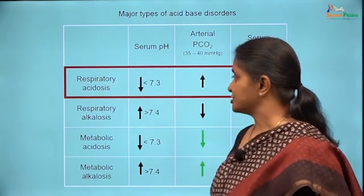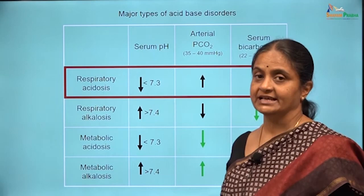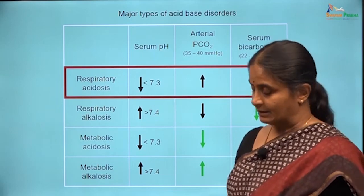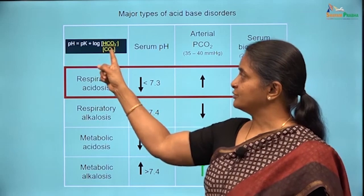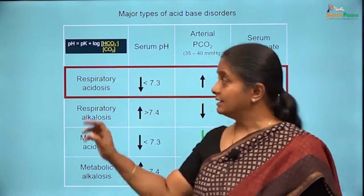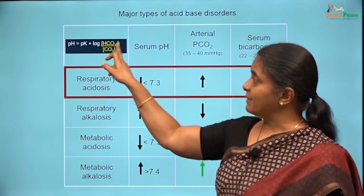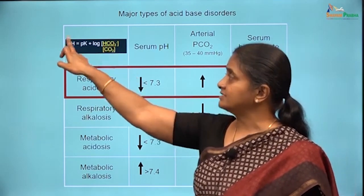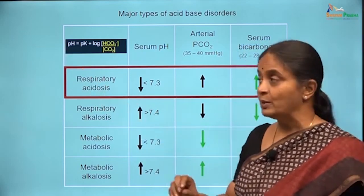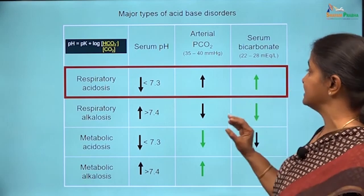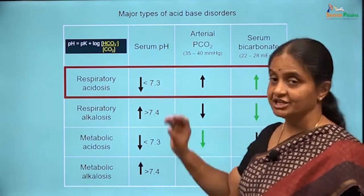The decrease in pH in this condition is due to an increase in plasma carbon dioxide. pH is dependent on the ratio between bicarbonate and carbon dioxide, and when carbon dioxide increases, a corresponding increase in bicarbonate can limit the change in pH.